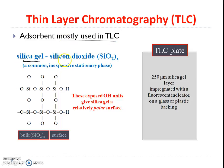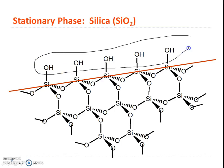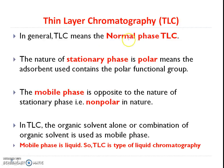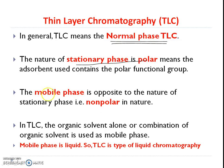Mostly silica gel is used as an adsorbent. Looking at its structure, there are hydroxy functional groups on the surface — these are the silanol functional groups. These hydroxy functional groups make the stationary phase polar in nature. Therefore, by default, TLC is a normal phase TLC, where the stationary phase is polar due to these silanol groups.